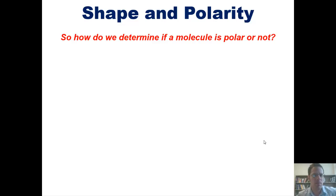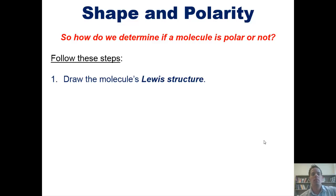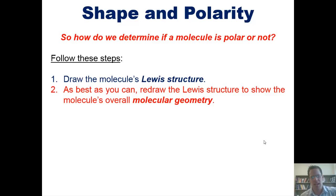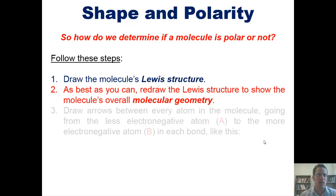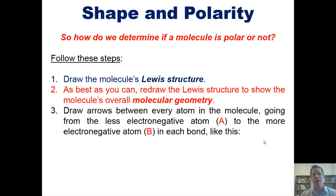So how do we determine if a molecule is polar or not? The way we do it is we follow these steps. First, draw the molecule's Lewis structure. Second, as best you can, redraw the Lewis structure to show the molecule's overall molecular geometry or shape. Third, draw arrows between every atom in the molecule going from the less electronegative atom A, or whatever atom it happens to be, to the more electronegative atom B in each bond, like this. Fourth, answer the truck question, which I'll explain momentarily by using a few different examples.